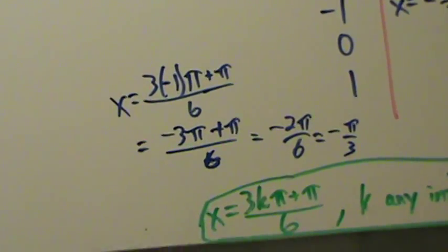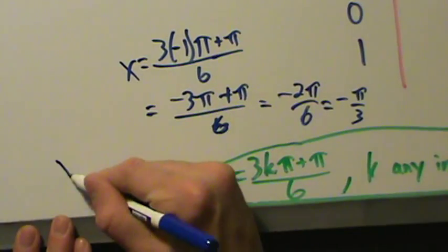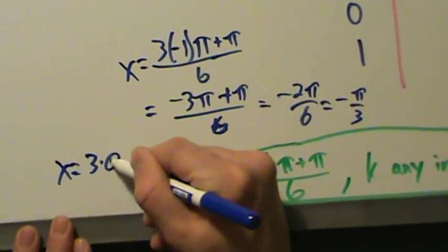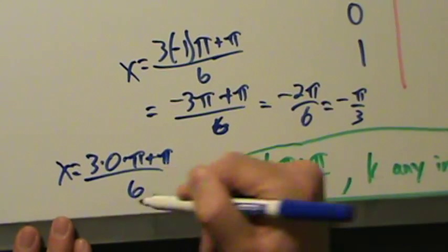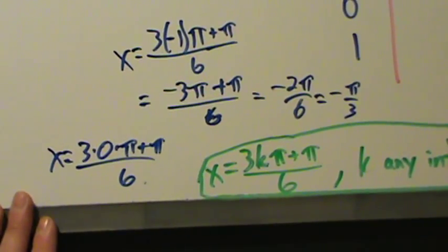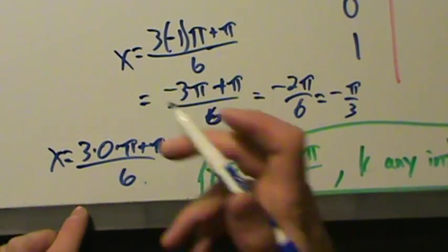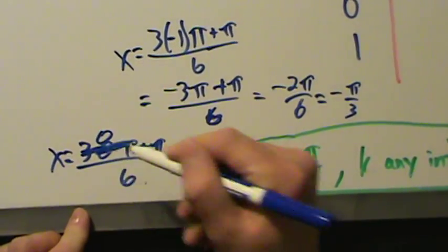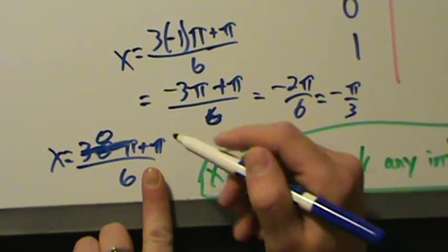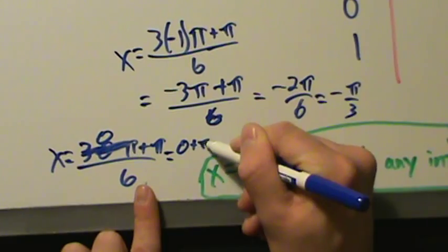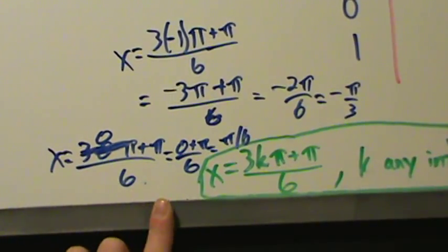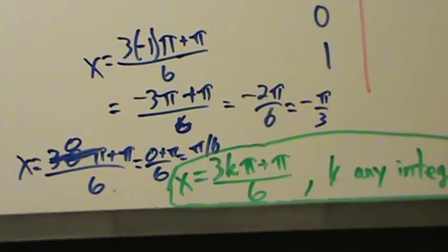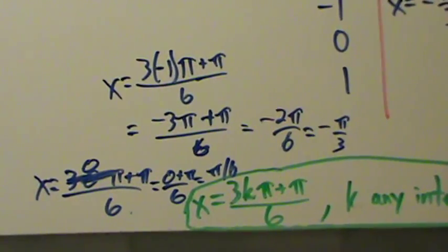When k is 0: x equals 3 times 0 times pi plus pi, all over 6. Three times zero times pi is all just zero, so we have zero plus pi all over 6, which is just pi over 6. So when k is zero, x equals pi over 6.